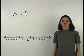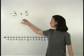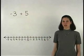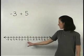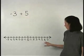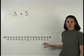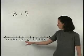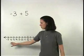To add the integers negative 3 plus 5, let's start with a number line. A number line has 0 in the middle, all numbers to the right of 0 are positive, and all numbers to the left of 0 are negative.